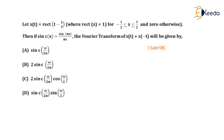The next question states x(t) = rect(t − ½), where rect(x) = 1 for |x| from −½ to ½ and 0 otherwise. Given that sinc(x) = sin(πx)/(πx), find the Fourier transform of x(t) + x(−t). This is a GATE 2008 problem. By the time reversal property: if x(t) ↔ X(ω), then x(−t) ↔ X(−ω).